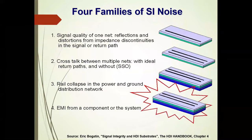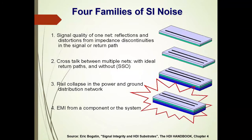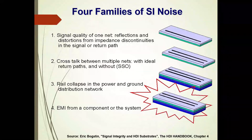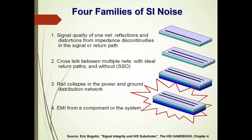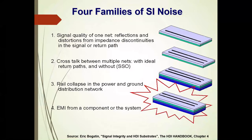Dr. Bogutin describes four families of signal integrity noise. Number one: signal quality of one net — reflections and discontinuities from impedance discontinuities in the signal and return path. Number two: crosstalk between multiple nets with ideal return paths. Number three: simultaneous switching noise causing rail collapse in the power and ground distribution network due to instantaneous demand. Number four: EMI from components of the system, either internal or external.